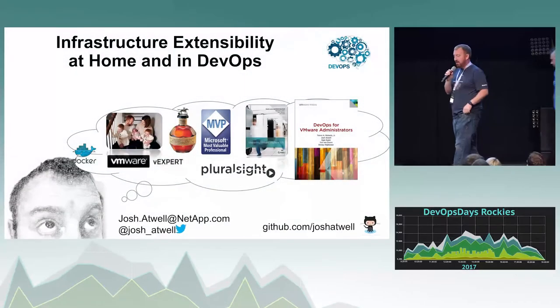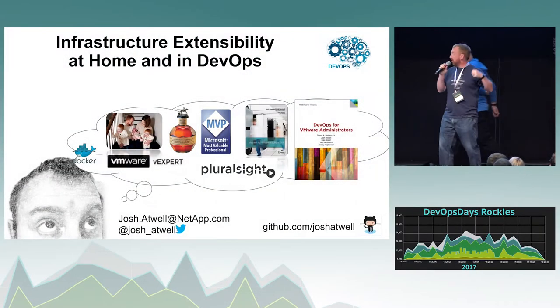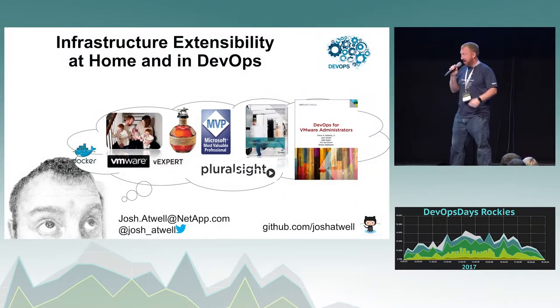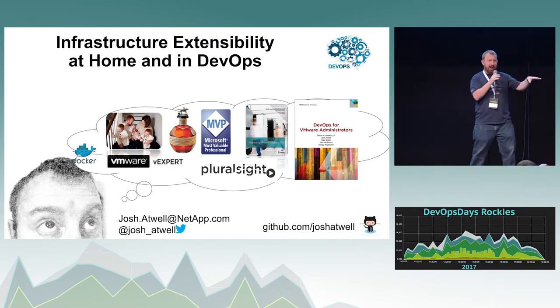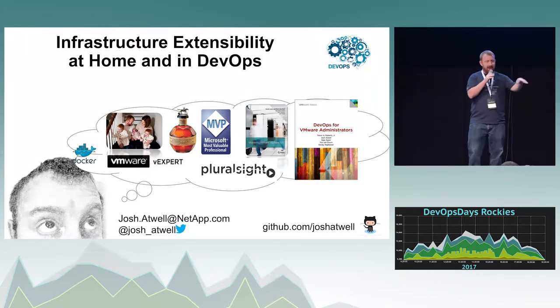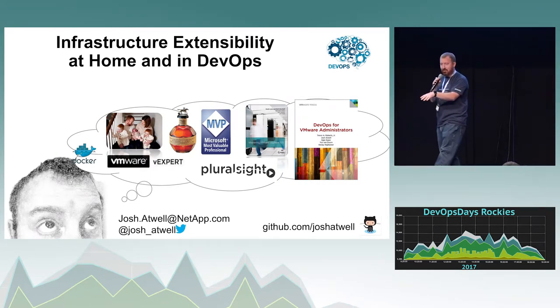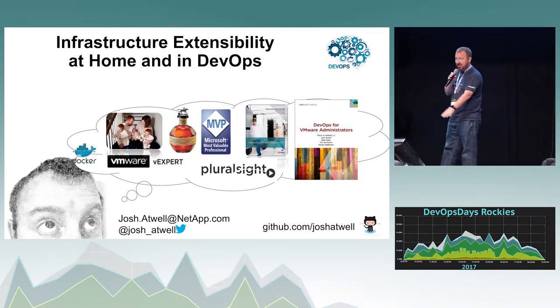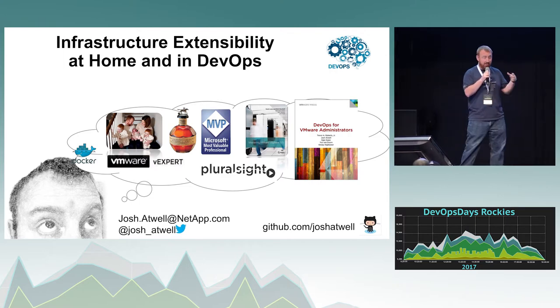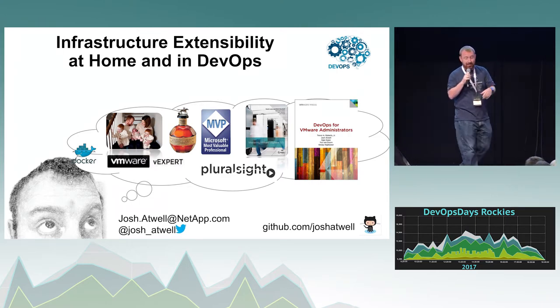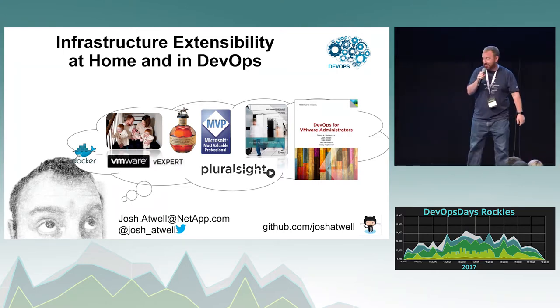Hi, my name is Josh Atwell. I introduced myself earlier — developer advocate at NetApp. I used to write a lot of code; now I write presentations. This is the most challenging type of presentation. Regardless of what I've done in the past, bourbon has been part of it.